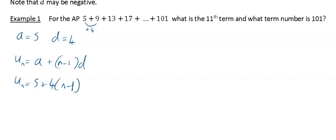For the 11th term: U_11 = 5 + 4 × (11 − 1) = 5 + 4 × 10 = 5 + 40 = 45. That's the first part done.